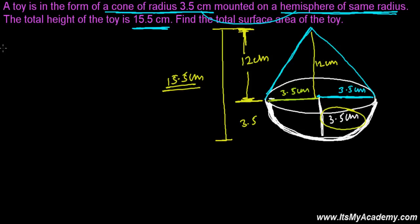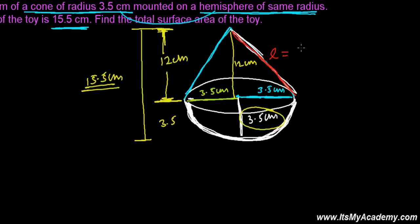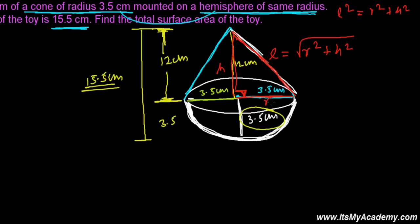Now that we know the height, we can easily find the slant height, which we generally represent as l. Using the Pythagorean theorem: l = √(r² + h²). This is a right angle, so the square of the hypotenuse l equals r² plus h². This is our h and this is our r.